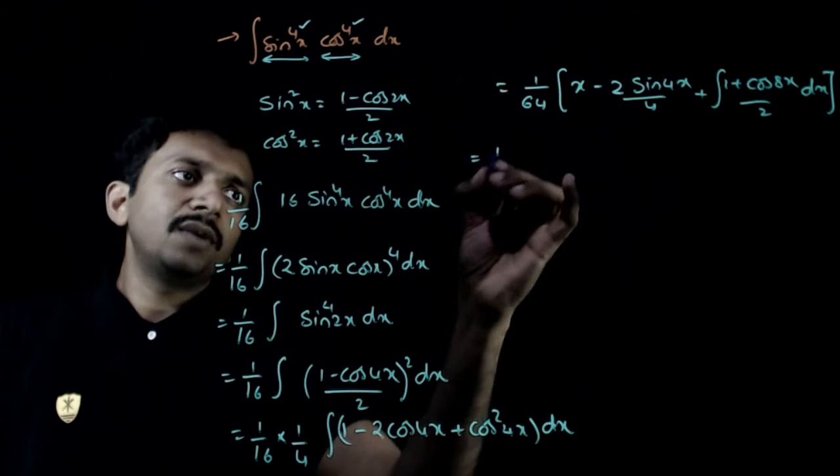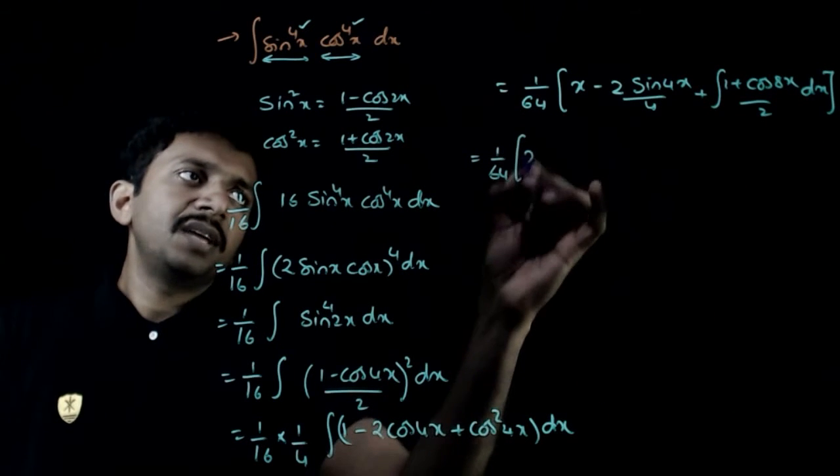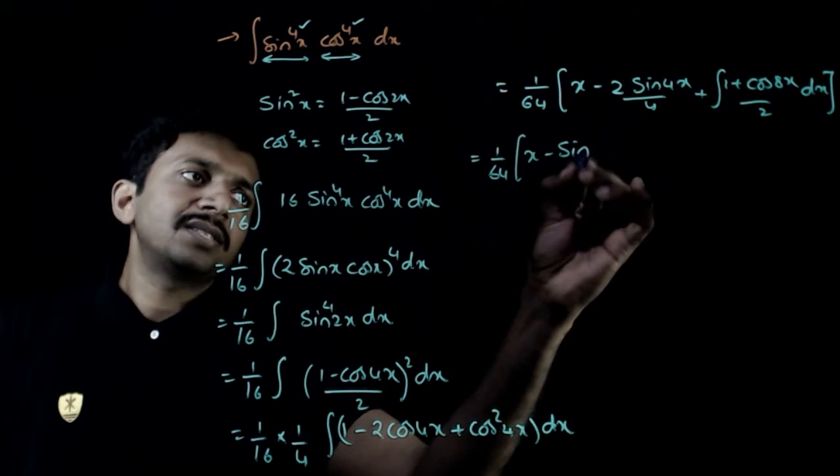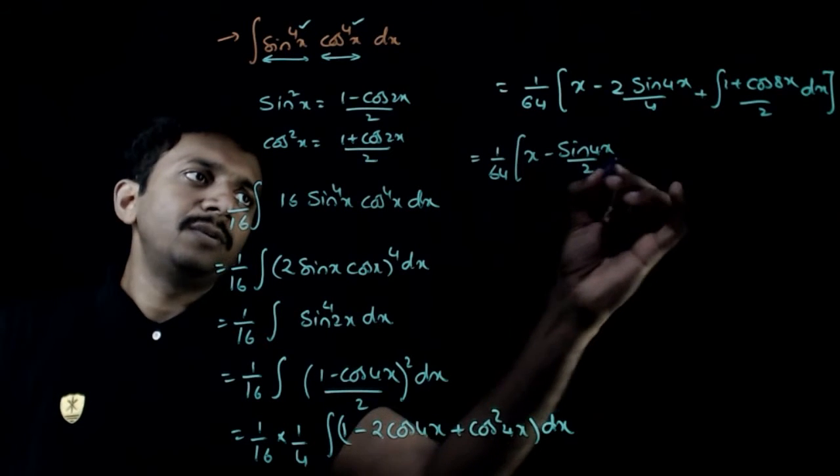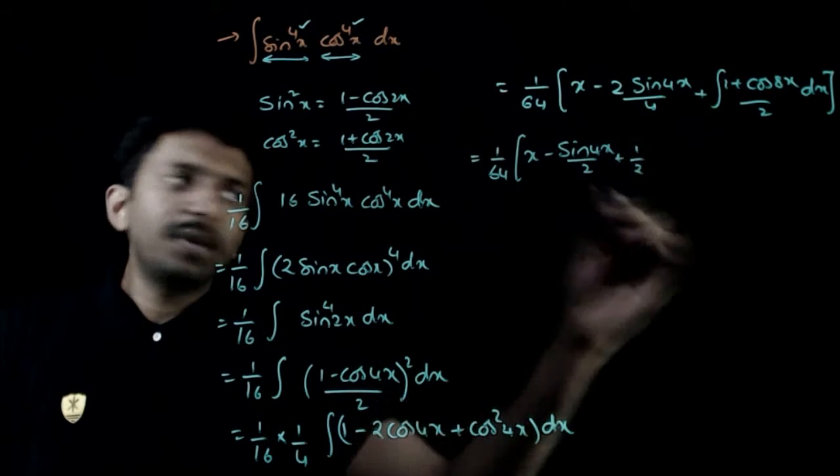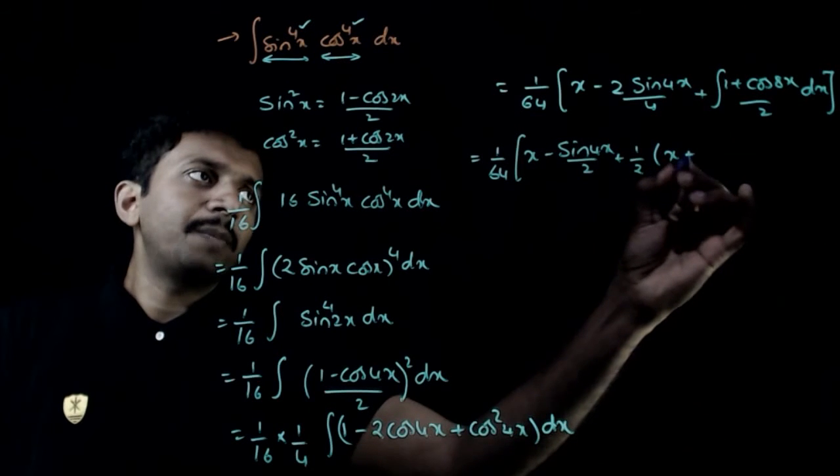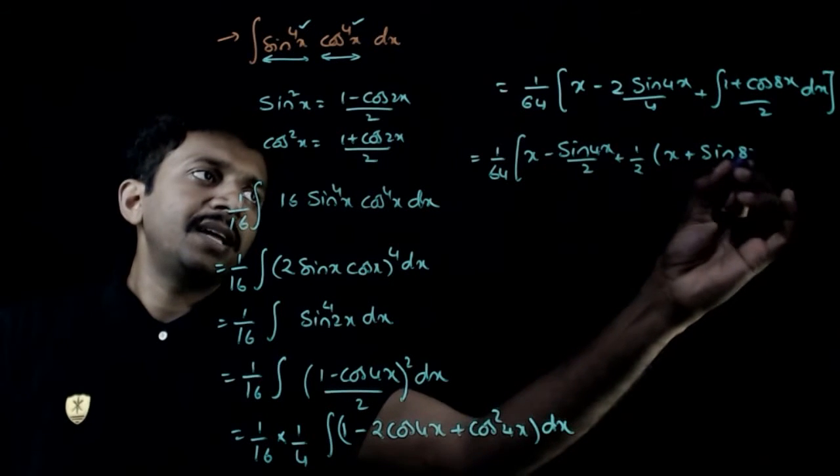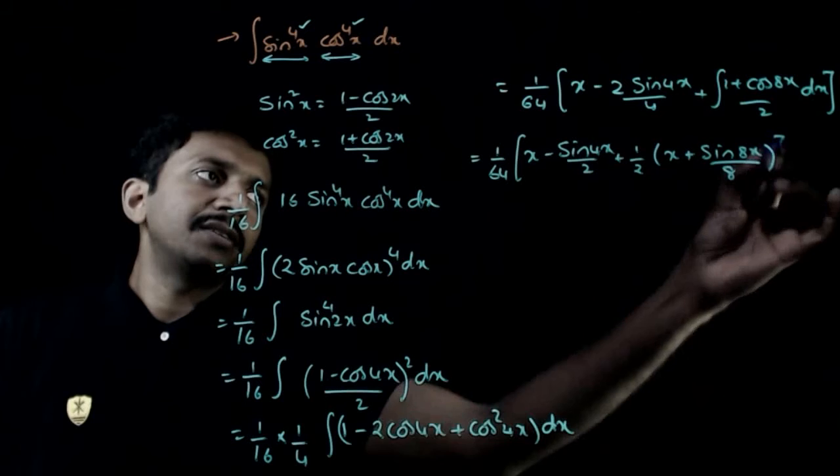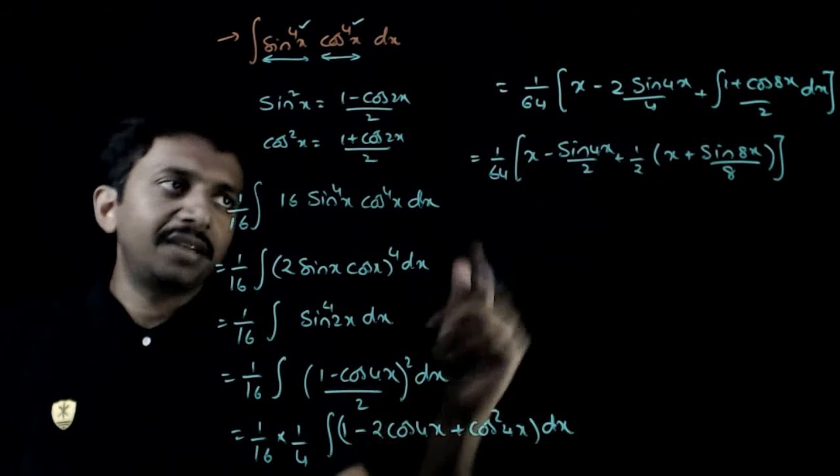That is equal to 1 by 64 times x minus sin 4x by 2 plus again, 1 by 2 common, you get x plus sin 8x by 8.